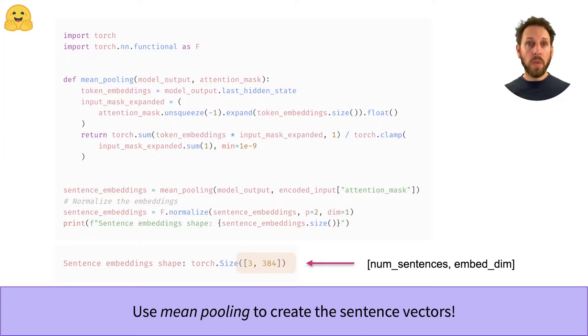With mean pooling, the only thing we need to make sure is that we don't include the padding tokens in the average, which is why you can see the attention mask being used here. This gives us a 384 dimensional vector for each sentence, which is exactly what we want.